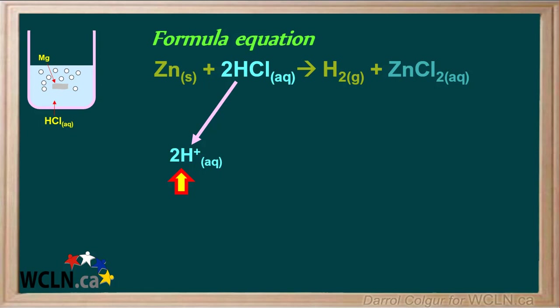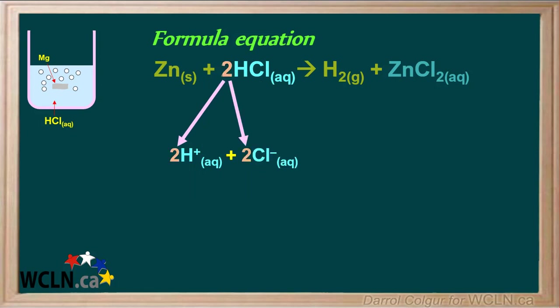We'll dissociate HCl into H⁺ ions and Cl⁻ ions. Because the HCl in the formula equation has a coefficient of 2, it means both of its ions — H⁺ and Cl⁻ — will also have a coefficient of 2.